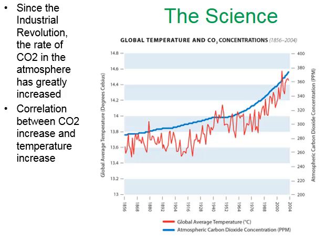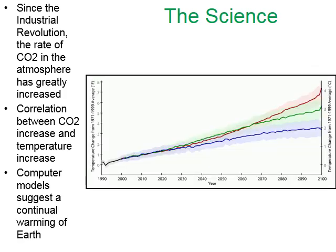Various organizations have created computer models, and each model suggests the same thing — the continual warming of the Earth. One model might suggest the Earth will warm two degrees over the next 100 to 300 years, another may say three degrees, another four degrees, but the general pattern of all the models indicates continued warming of the Earth unless very drastic actions are taken.